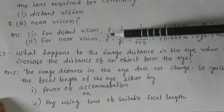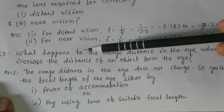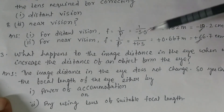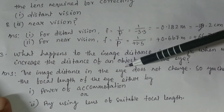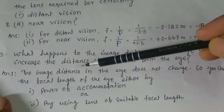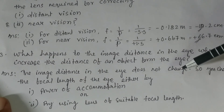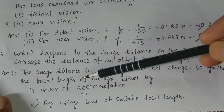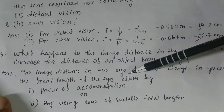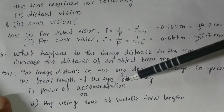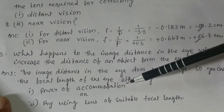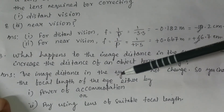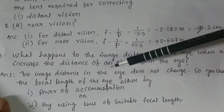What happens to the image distance in the eye when we increase the distance of an object from the eye? The image distance in the eye does not change. You cannot change the image distance of the eye. You can change the focal length either through the power of accommodation, which happens inside the eye, or by using a lens of suitable focal length. But remember, image distance in the eye does not change.